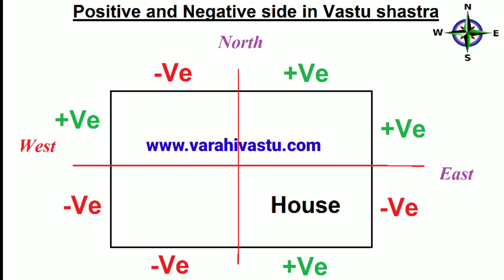Placing a window at the south-west portion affects a lot of inmates. Don't put windows at the south-west corner because the south-west corner brings negative energy.